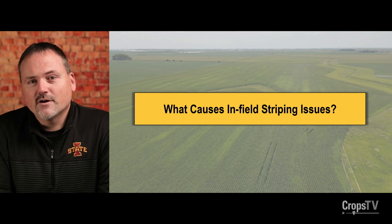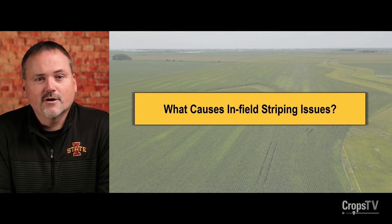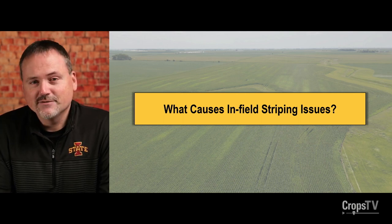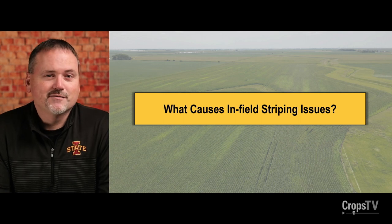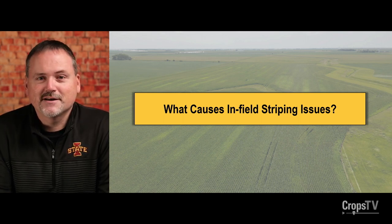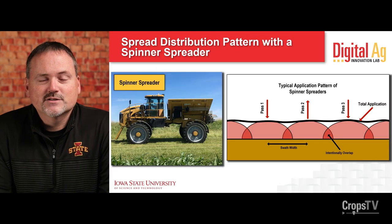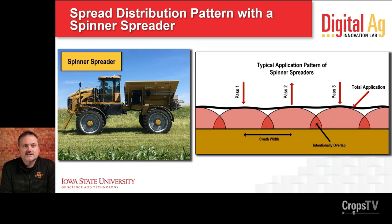When we think about what causes these in-field striping issues, it's largely due to our ability to distribute fertilizer evenly across the width of a machine as we're making dry fertilizer passes through the field. I want to start with a reminder of the process of dry fertilizer application. Here in the Midwest, we have two traditional methods. The first is with a spinner spreader, which has been around for literally decades and is the most commonly used applicator for applying dry fertilizer.